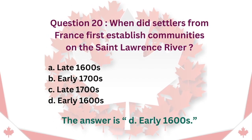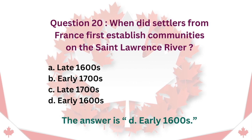Question 20: When did settlers from France first establish communities on the St. Lawrence River? A. Late 1600s. B. Early 1700s. C. Late 1700s. D. Early 1600s. The answer is D. Early 1600s.